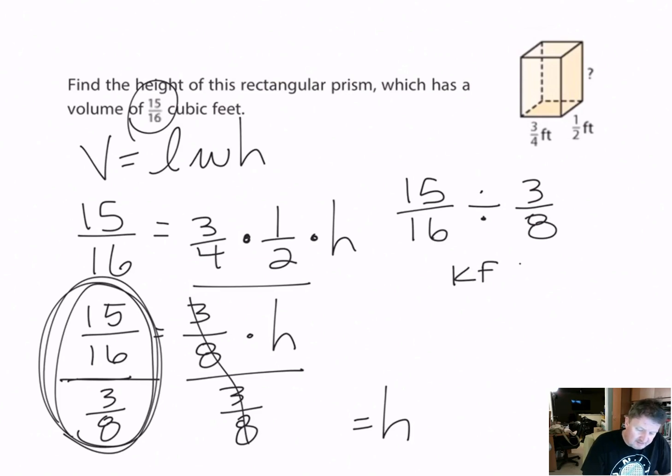We do the KFC method. It's a little quick acronym to help you remember what to do. We keep this first fraction 15/16, we flip the second fraction to 8/3, and then we change from a division problem to a multiplication problem.